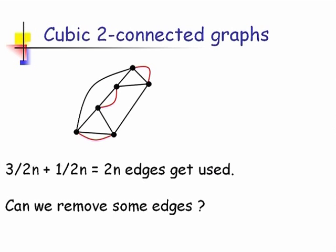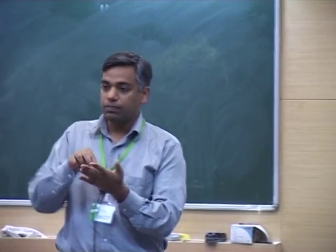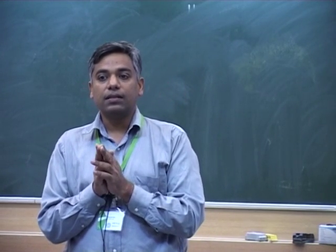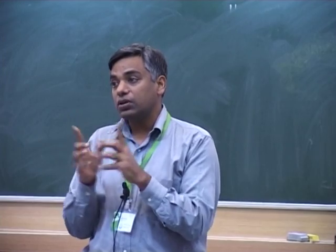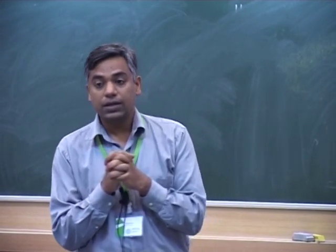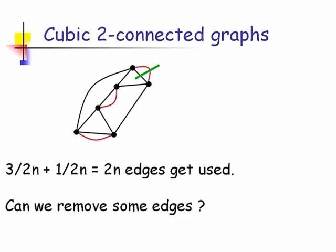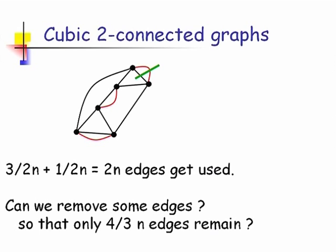So the idea is: can we remove some edges? Can you tell me some edges which we can remove potentially? If we remove edges which are parallel edges, the graph remains Eulerian because it reduces degree on both ends by 2 — but we must ensure it remains connected. Because of the back edge being present, removing the parallel pair will not disconnect the graph. So in that case, we can remove both of those two edges. That's the key idea, and we'll see how to work with that to get 4/3.